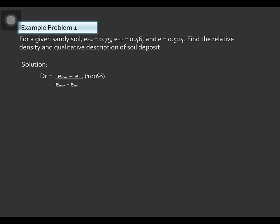Solution: From the formula of the relative density equal to emax minus e all over emax minus emin, multiply to 100% to get an answer in percentage. Substitute the values of emax, e, and emin. We will solve the relative density equal to 77.93%.